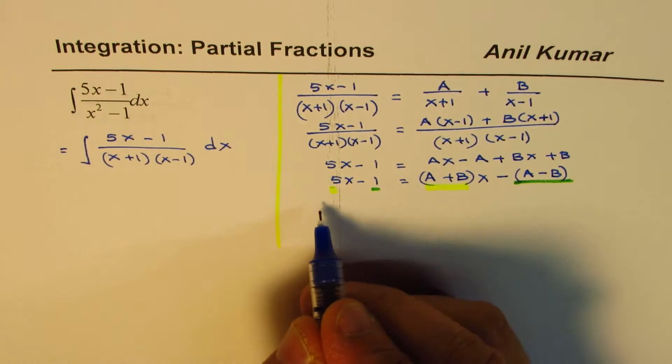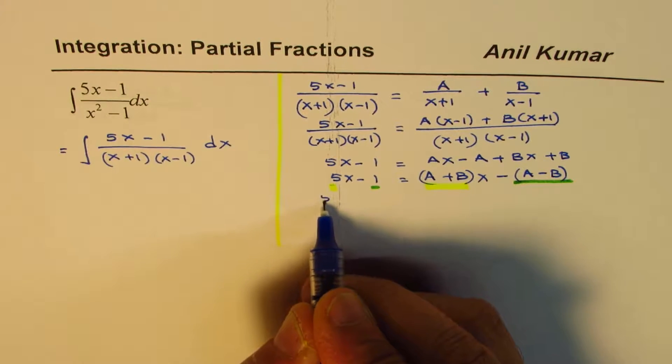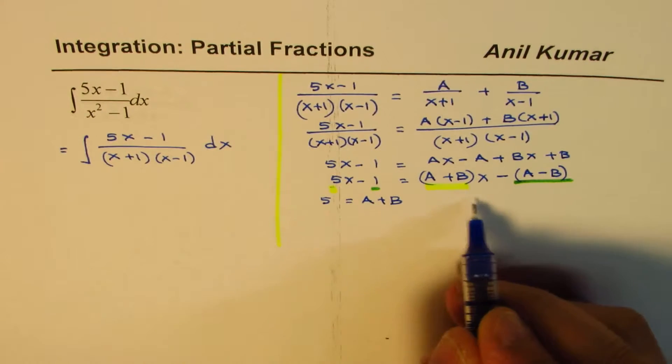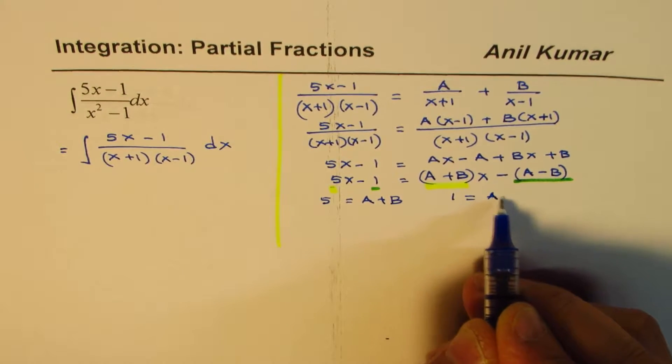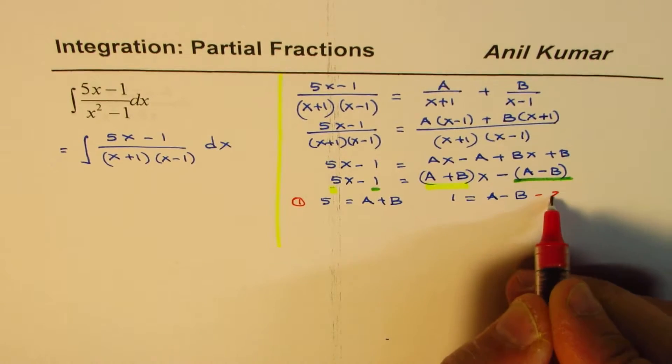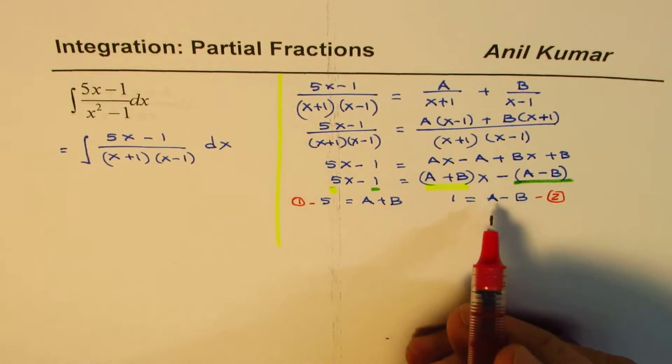So the first equation which we get is 5 equals to A plus B, and the second one is 1 equals to A minus B. We have these two equations, equation 1, and let's say equation 2.